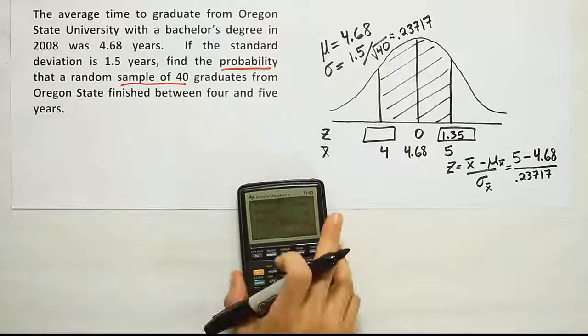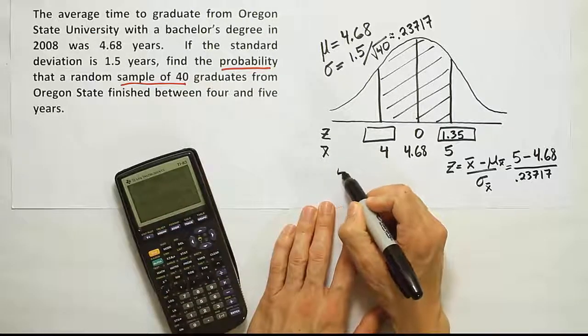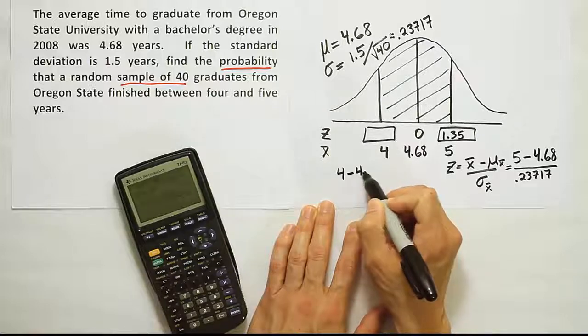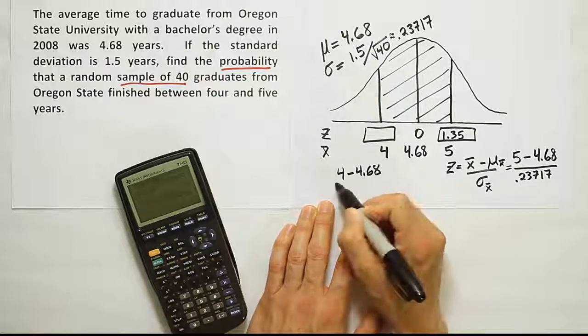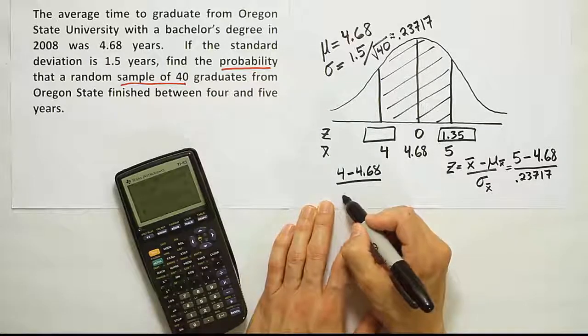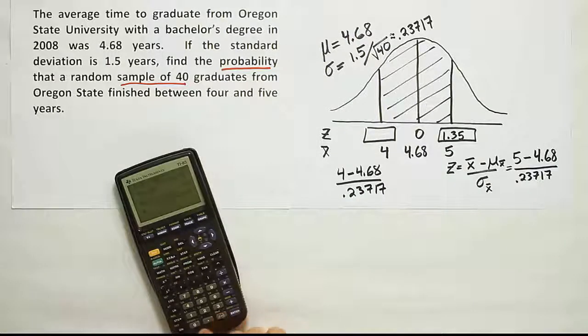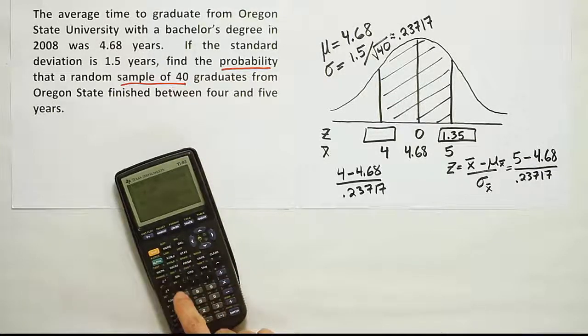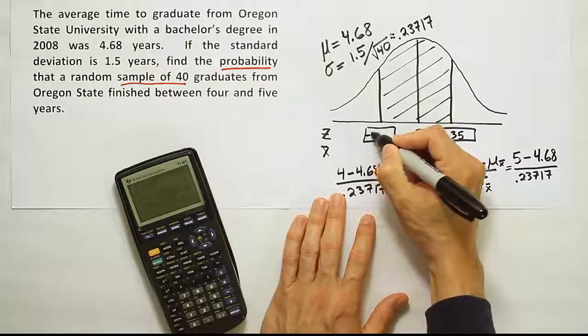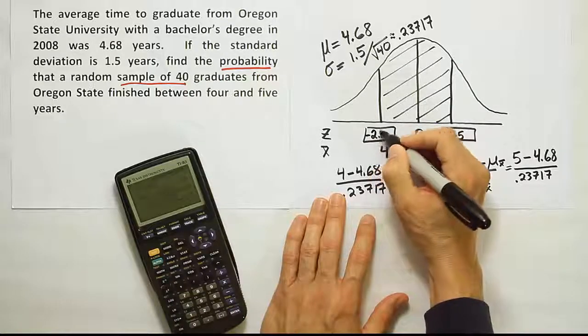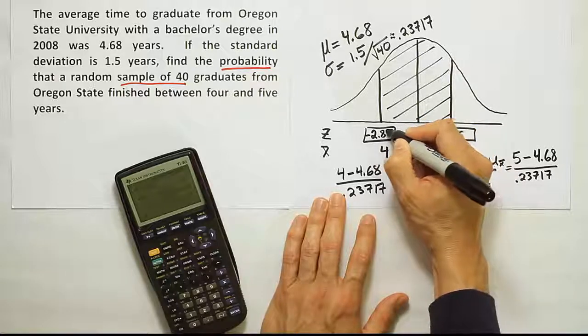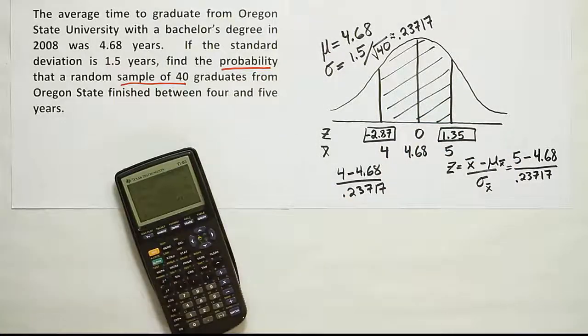Let's do the same for the 4 now. We're going to convert the 4 to a z-score. We'll have 4 minus 4.68. And that will be divided by the same .23717. So minus .68 divided by .23717. And when we do that, we end up with negative 2.87. So rounding that to two decimal places, we get negative 2.87.